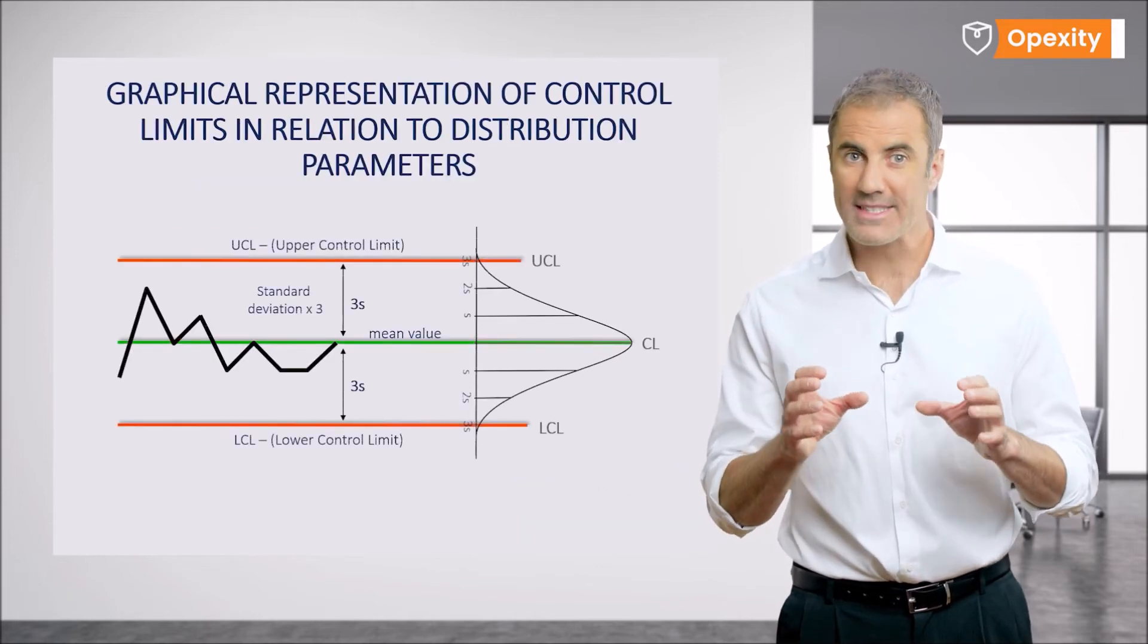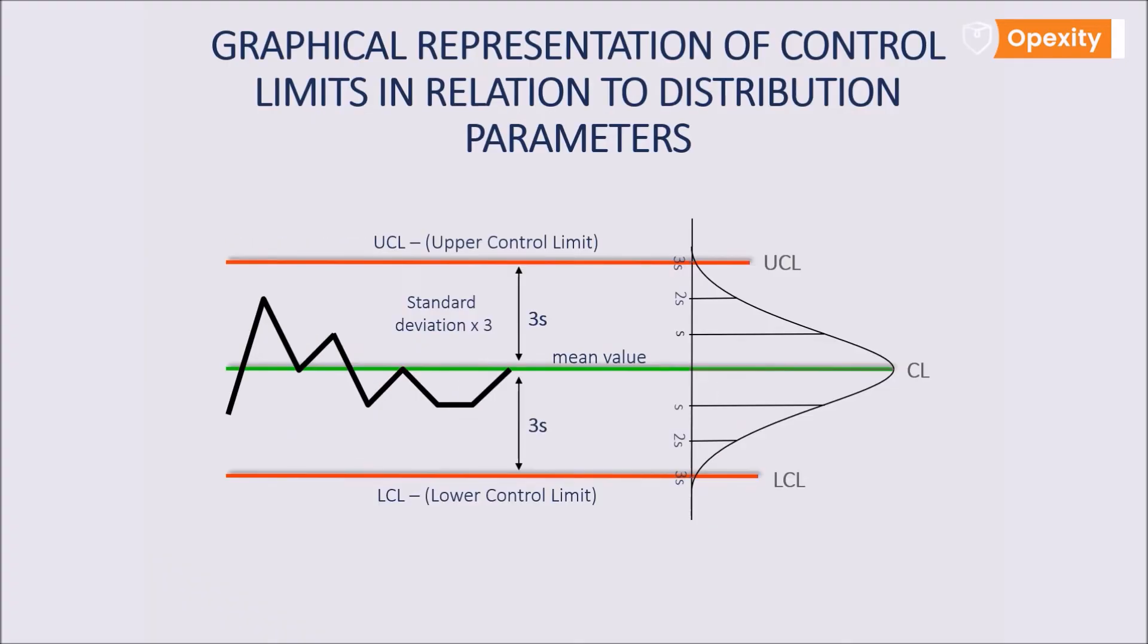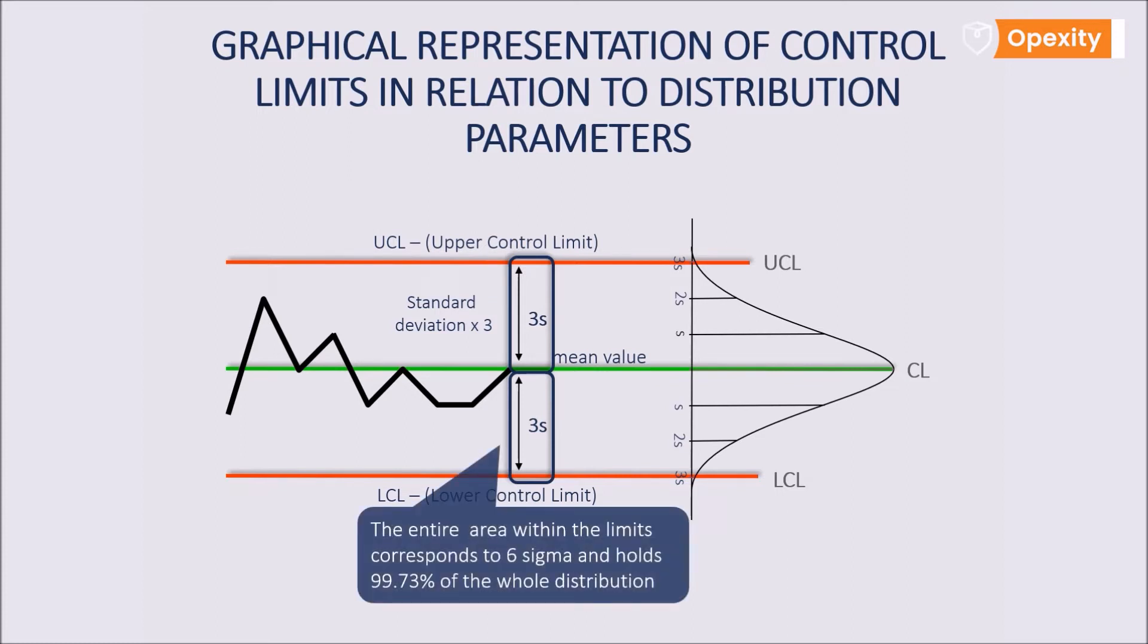Control limits can be calculated from appropriate statistical formulae. Their graphical representation is linked to a very important distribution parameter, the standard deviation, sigma. Three sigma limits is a statistical calculation where the data are within three standard deviations from a mean. So, the entire area within the limits corresponds to six sigma and holds 99.73% of the whole distribution, which corresponds to the Schuhart principle.